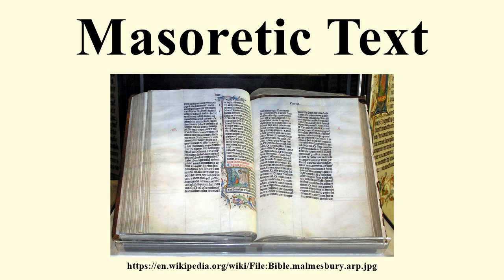Masora: By long tradition, a ritual Sefer Torah could contain only the Hebrew consonantal text — nothing added, nothing taken away. The Masoretic codices, however, provide extensive additional material called Masora to show correct pronunciation and cantillation, protect against scribal errors, and annotate possible variants. The manuscripts thus include vowel points, pronunciation marks and stress accents in the text, short annotations in the side margins, and longer more extensive notes in the upper and lower margins and collected at the end of each book. These notes were added because the Masoretes recognized the possibility of human error in copying the Hebrew Bible.